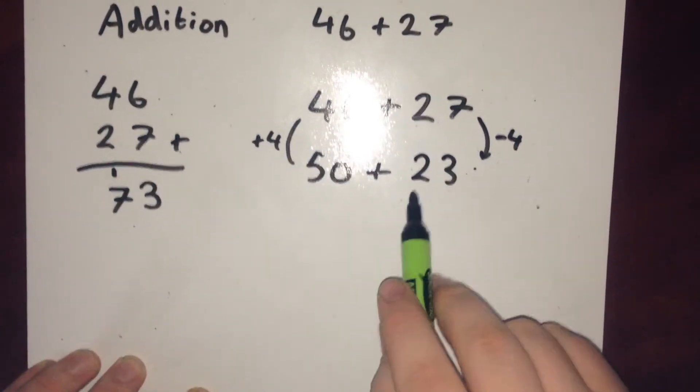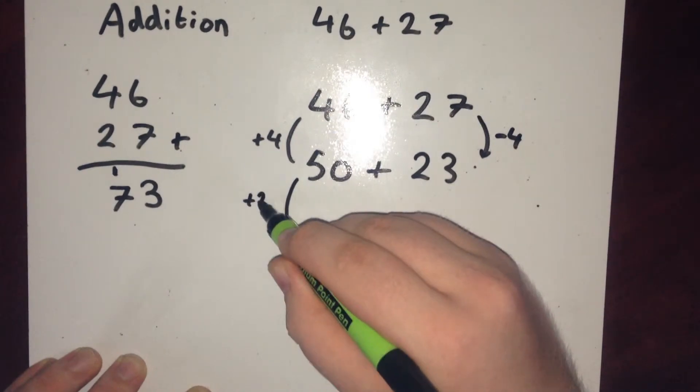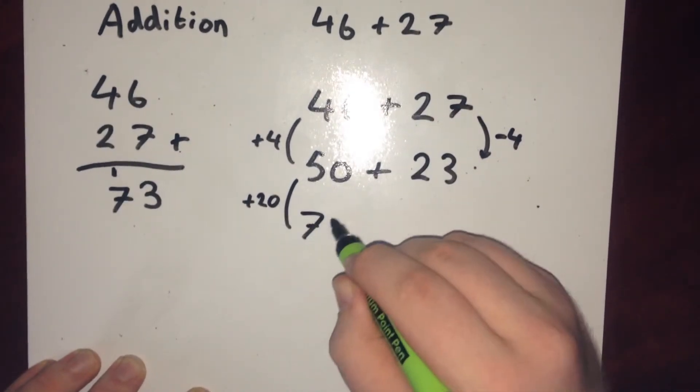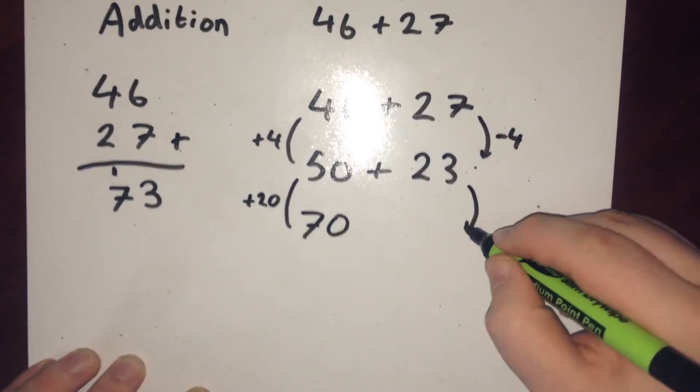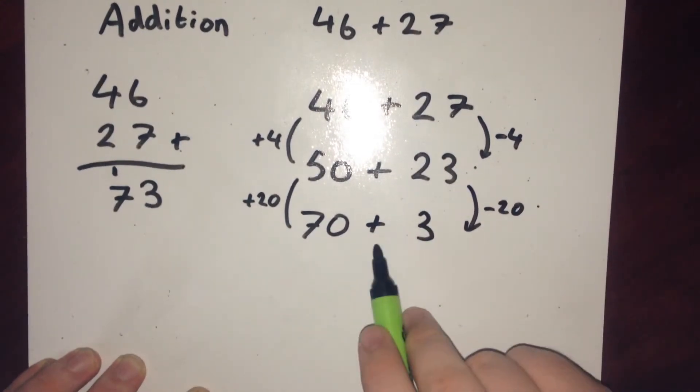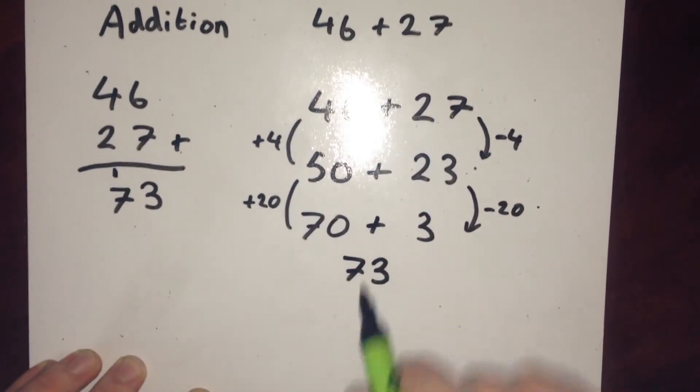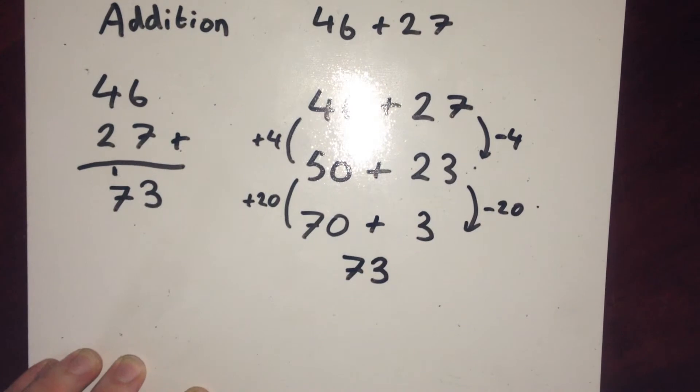Then I could add on the 20. So add 20 on to give 70. Of course, I'm now left with 3. And 70 add 3, that's where our 73 appears again. Same answer, different method.